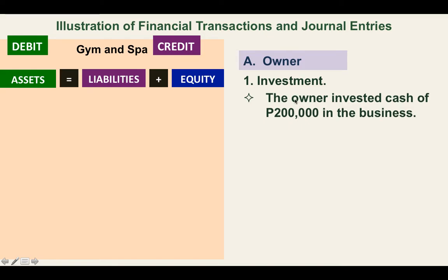The financial transaction is: the owner invested cash of $200,000 in the business. As we discussed with journal entries, there is a debit and credit. We debit what the business receives and credit what the business gives. In this case, the business received $200,000 from the owner, so we debit cash for $200,000.